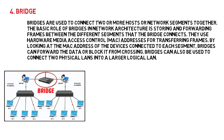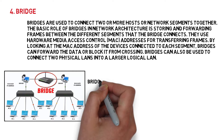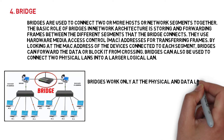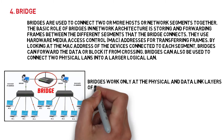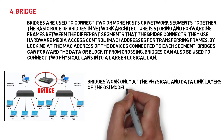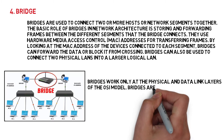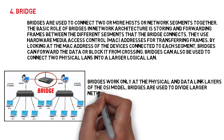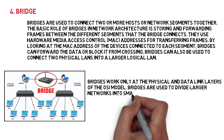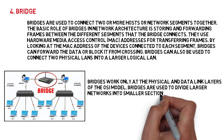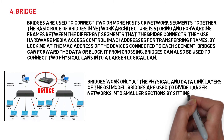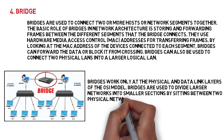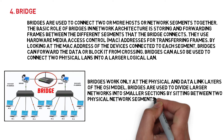Bridges can also be used to connect two physical LANs into a larger logical LAN. Bridges work only at the physical and data link layers of the OSI model. Bridges are used to divide larger networks into smaller sections by sitting between two physical network segments and managing the flow of data between the two.